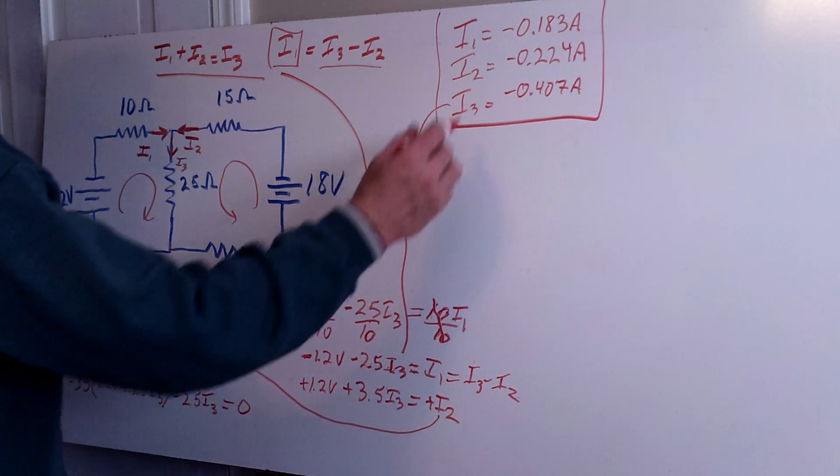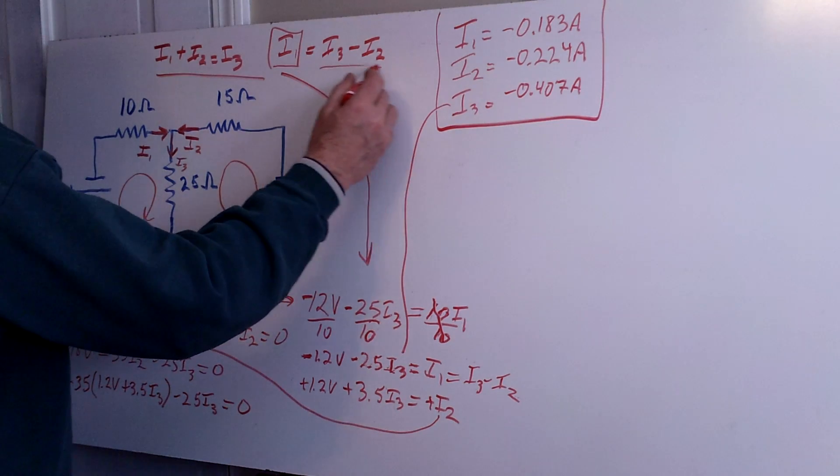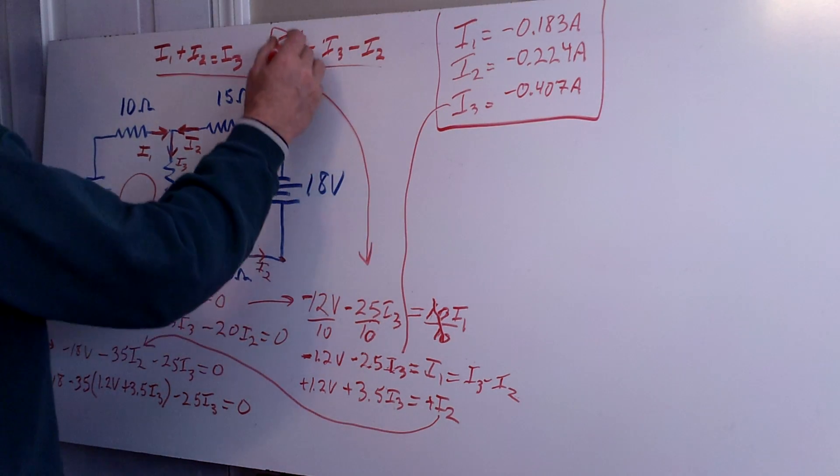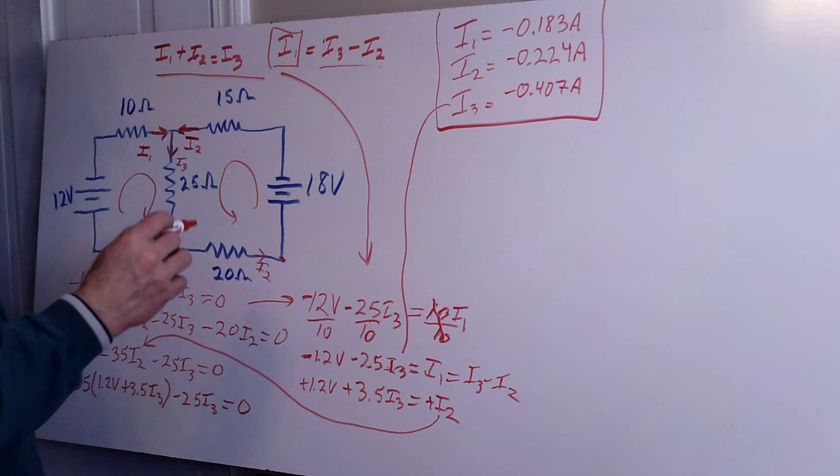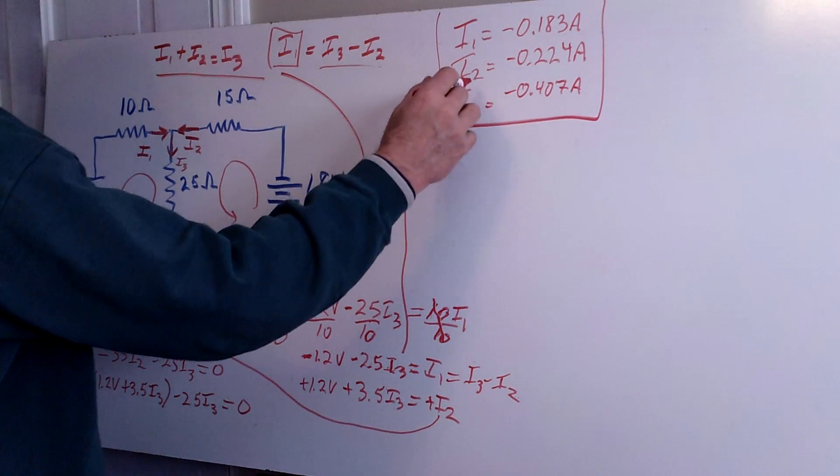And then finally I take I3 and I2 and I use this equation right here and use that to solve for I1. And then I have all three values: I1, I2, and I3.